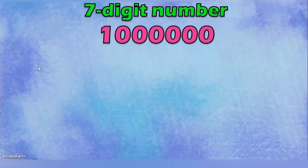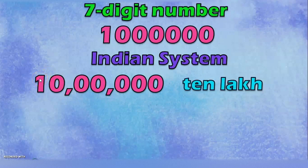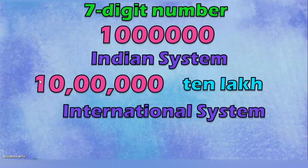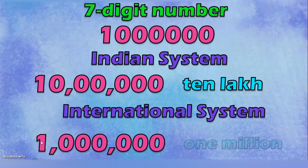Let us move on to a 7 digit number. In the Indian system, you place a comma after ones, tens, hundreds, then after thousand and ten thousand, and the remaining place values are lakh and ten lakh. So the number name for this 7 digit number in the Indian system is ten lakh. In the International system: ones, tens, hundreds, comma, thousand, ten thousand, hundred thousand, comma — the next place value is million. So the number name is one million. Ten lakh in the Indian system is equal to one million in the International system.